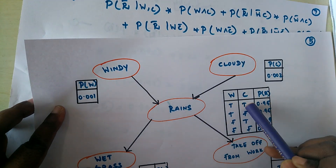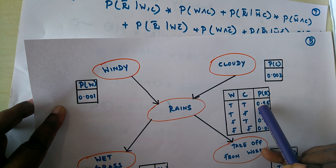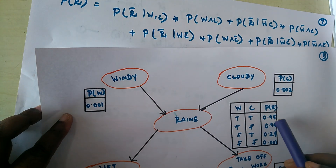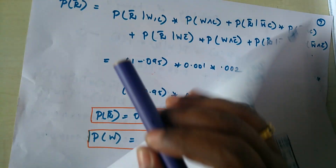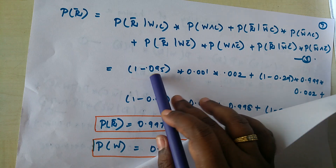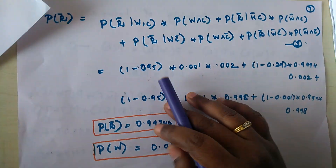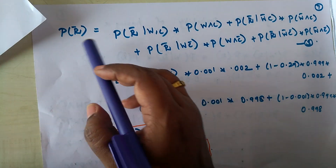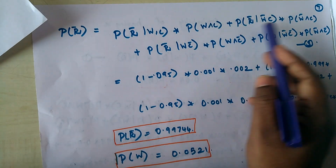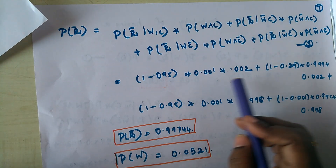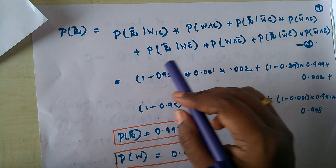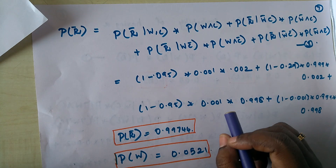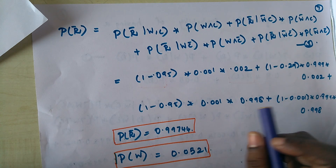When wind is true and cloudy is true, the probability of rain is 0.95, so the probability of not getting rain is 1 minus 0.95. That is the only difference between calculating the probability of rain and not raining — the similar factors can be easily derived as discussed in the rain probability calculation.